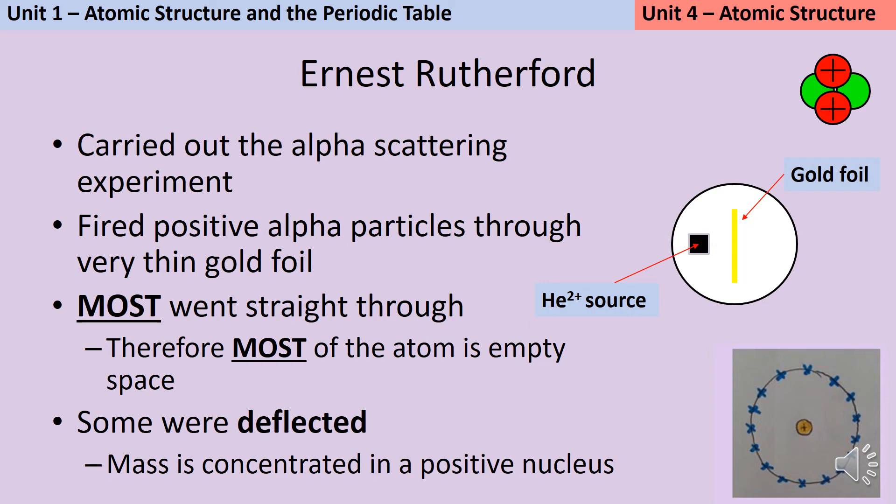What they found is that the vast majority of those alpha particles actually went straight through the gold foil, and they used this observation to conclude that most of the atom is actually empty space. Some particles were deflected either by small angles or directly backwards in backscattering. They used this to conclude that the vast majority of the mass is concentrated right in the center into what we now call the nucleus. They also realized that the nucleus repelling the positive alpha particle was evidence that the nucleus had a positive charge.